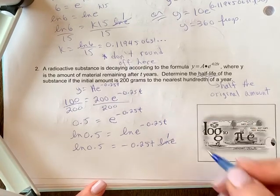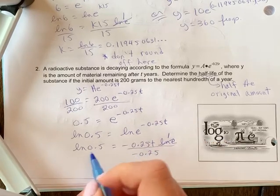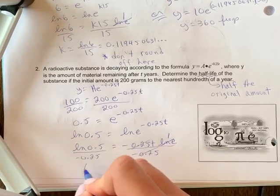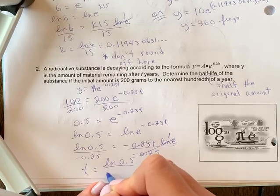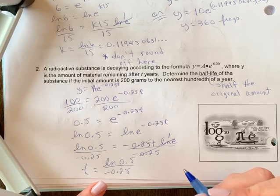Now I can divide off my negative 0.25, so t is equal to ln of 0.5 divided by negative 0.25. You're going to put that into your calculator.